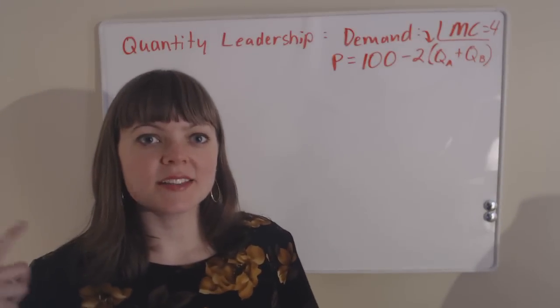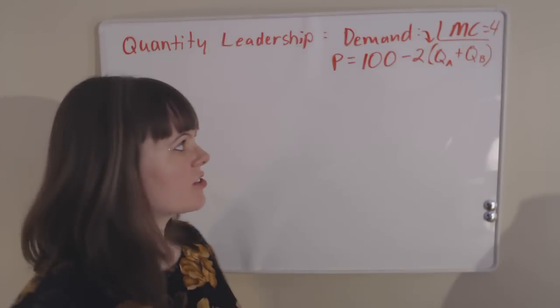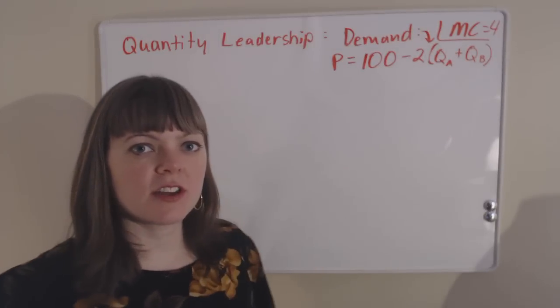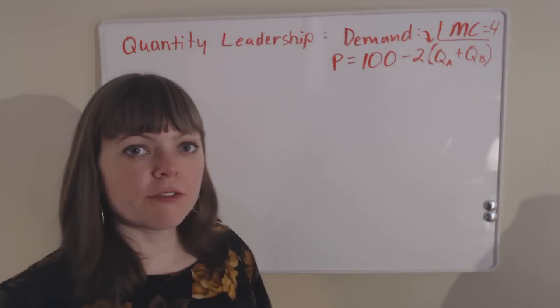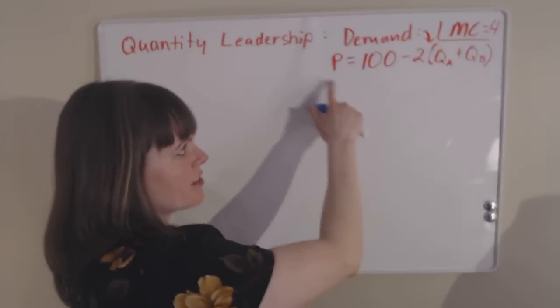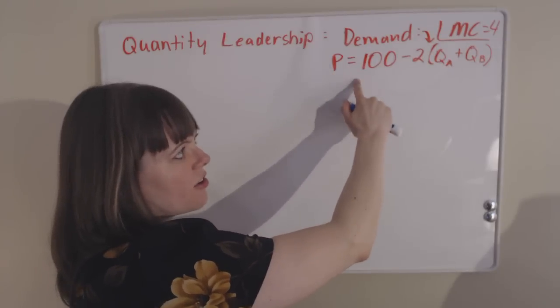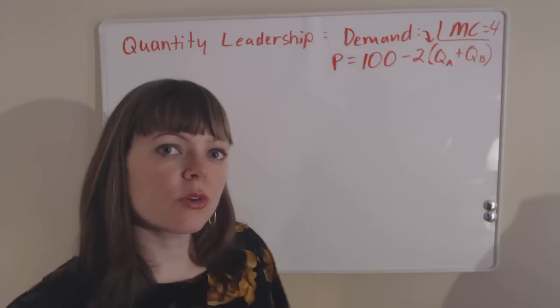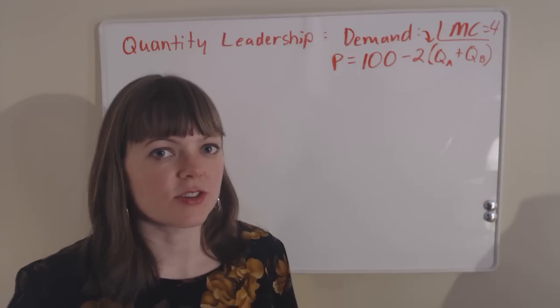I'm going over a quantity leadership problem. In this case, there's going to be a marginal cost of production of $4 for both firms, and the industry demand is going to be the price of the industry is $100 minus 2 times the total quantity produced in the industry.